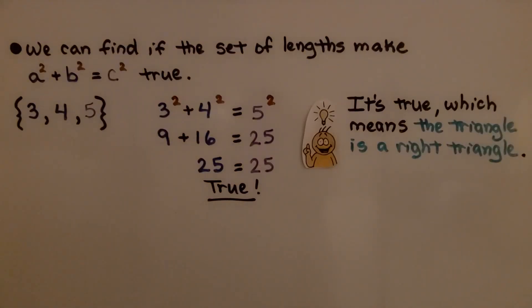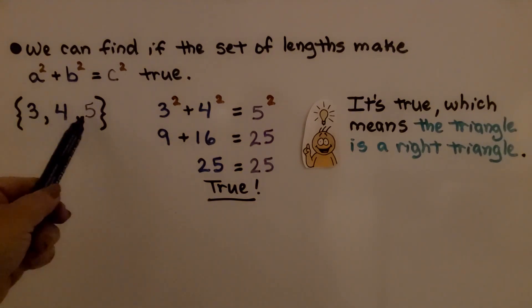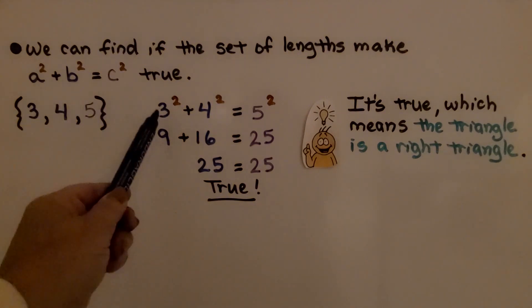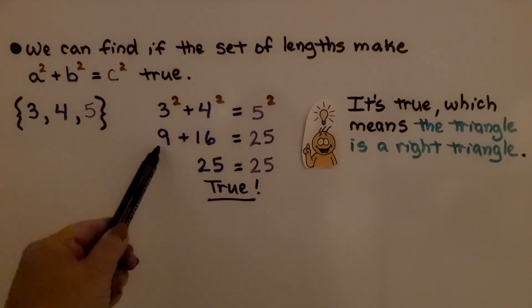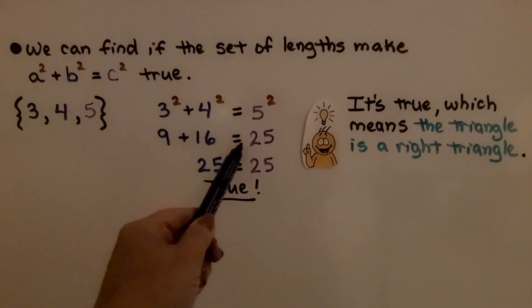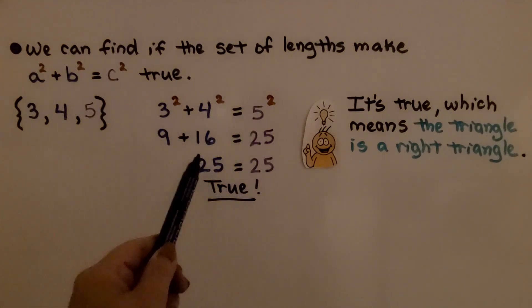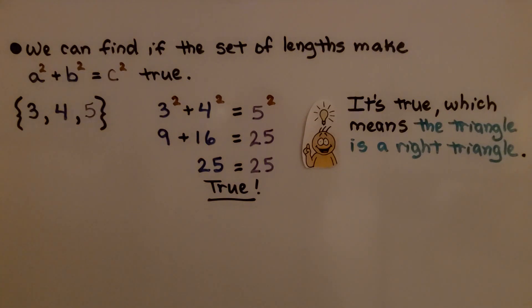We can find if the set of lengths make a squared plus b squared equals c squared true. We have the numbers 3, 4, and 5 in our set. 3 squared plus 4 squared equals 5 squared, which means 9 plus 16 equals 25. Yes, 25 equals 25, which is true, so the triangle is a right triangle.